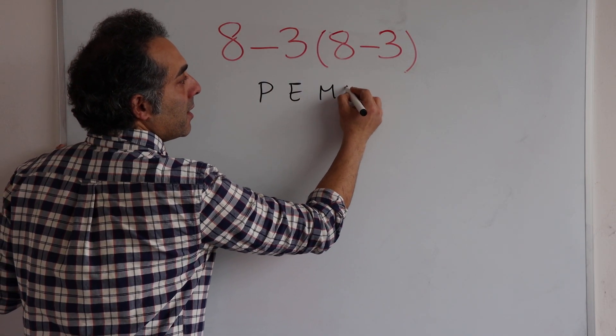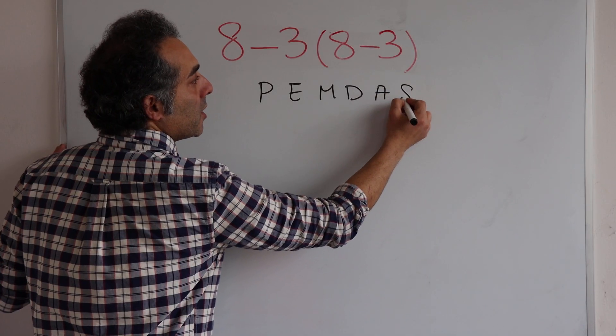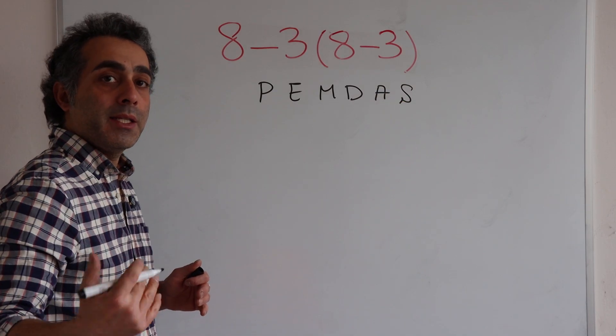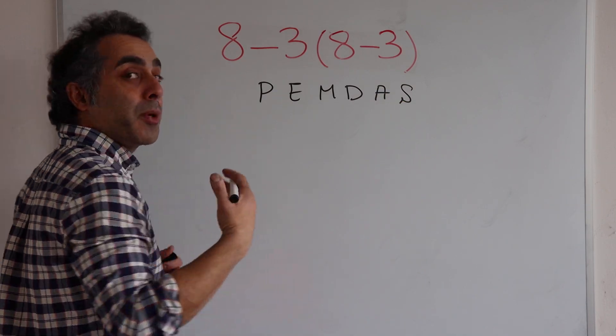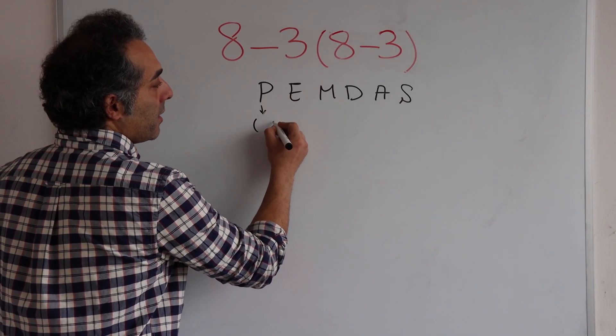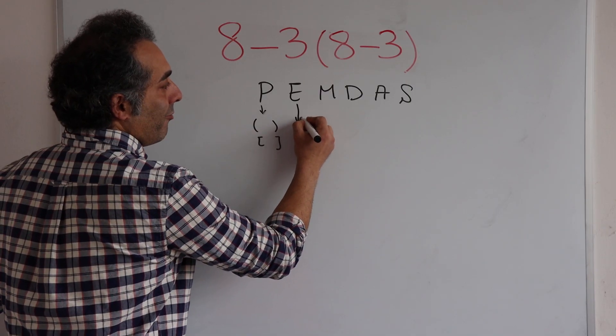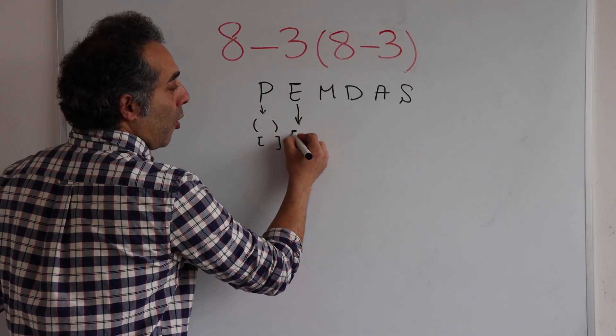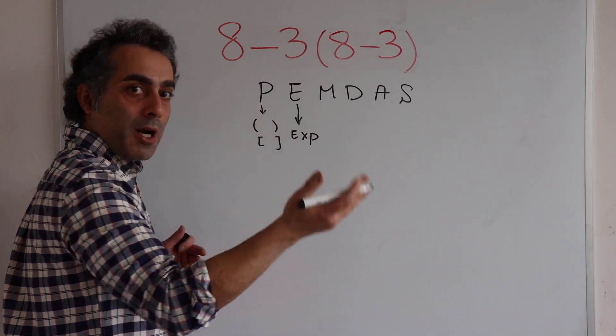For PEMDAS, we can decide which operations are in higher order, higher priority. P is the calculations inside parentheses and brackets. E stands for exponent or power numbers.